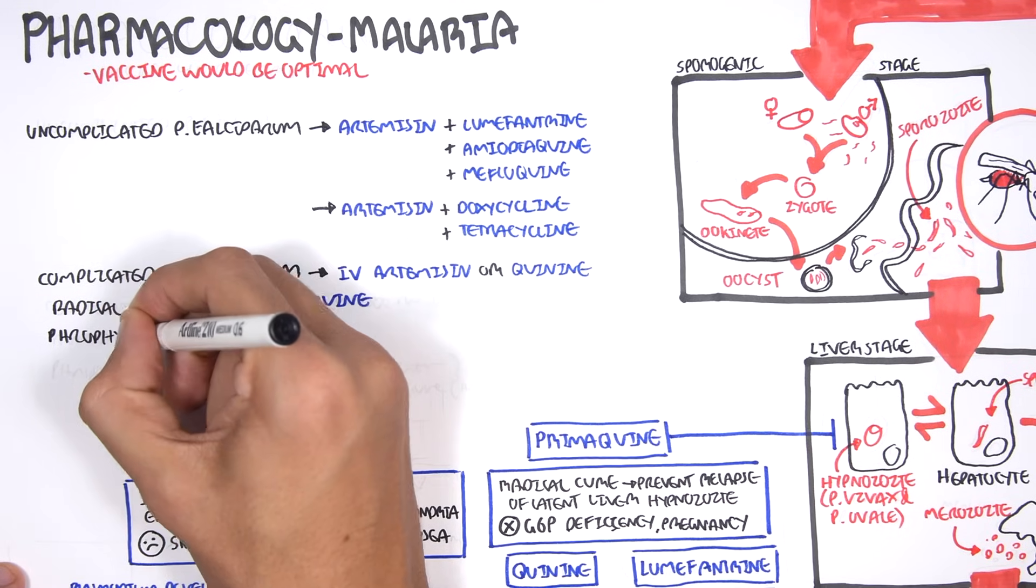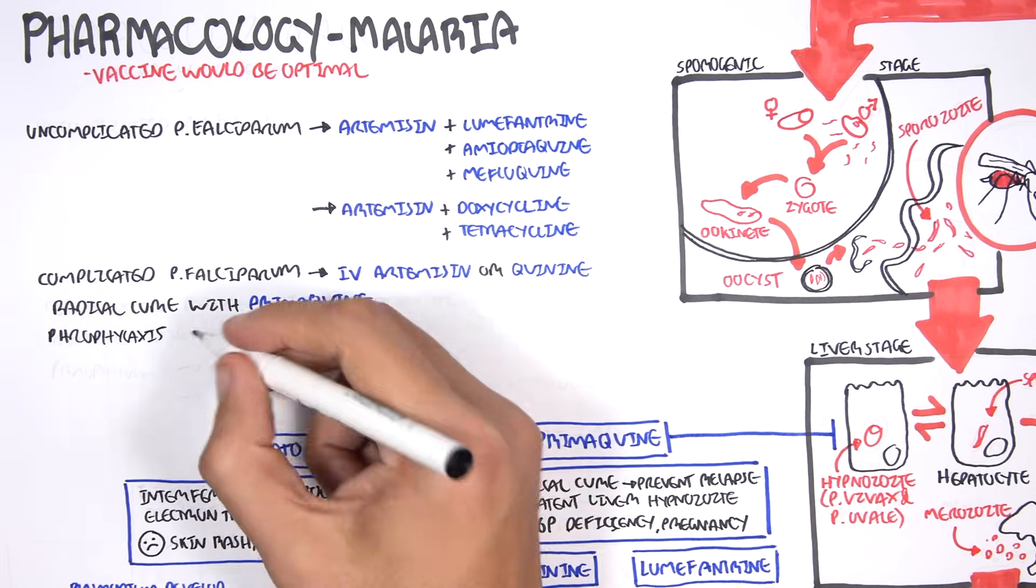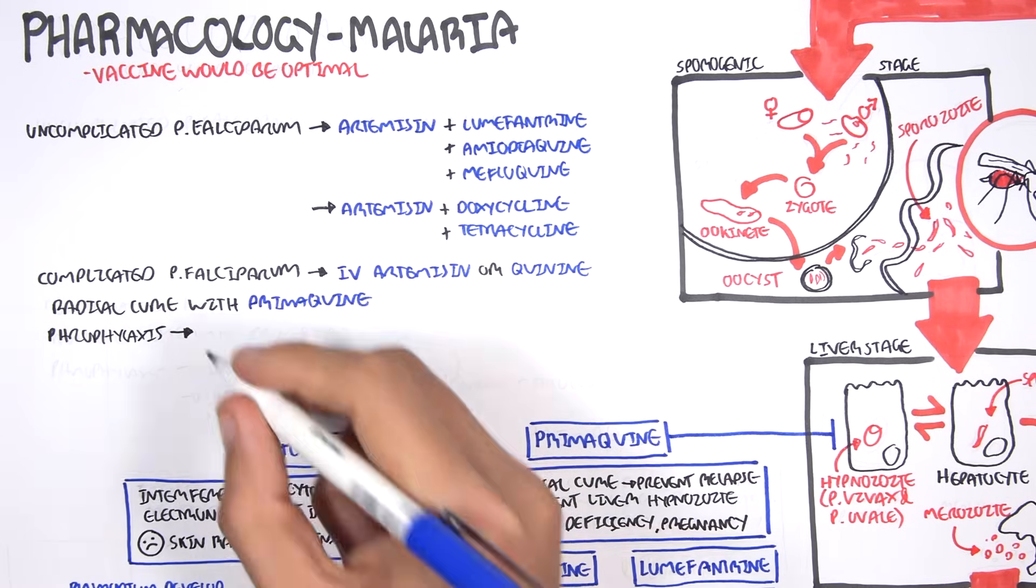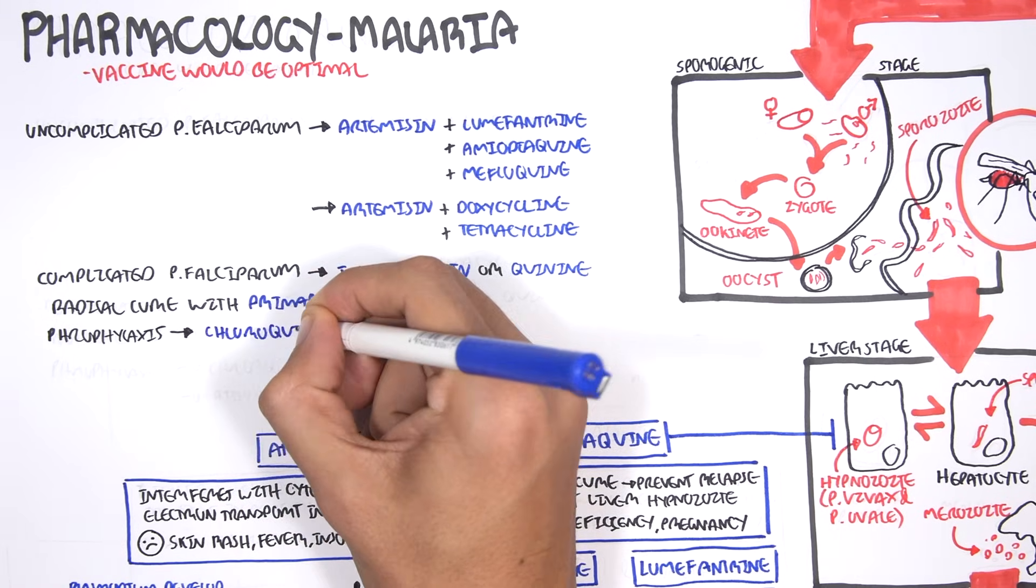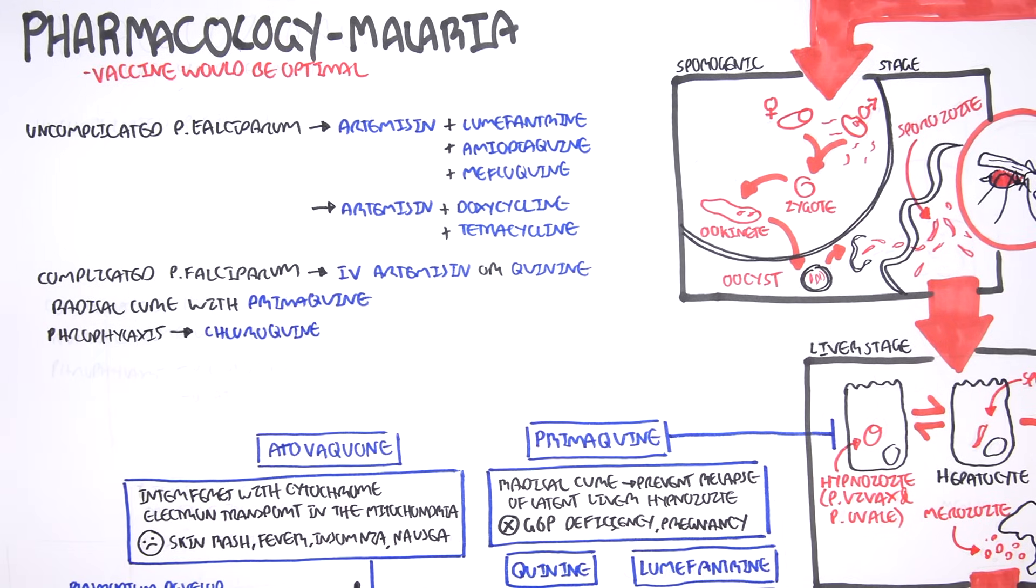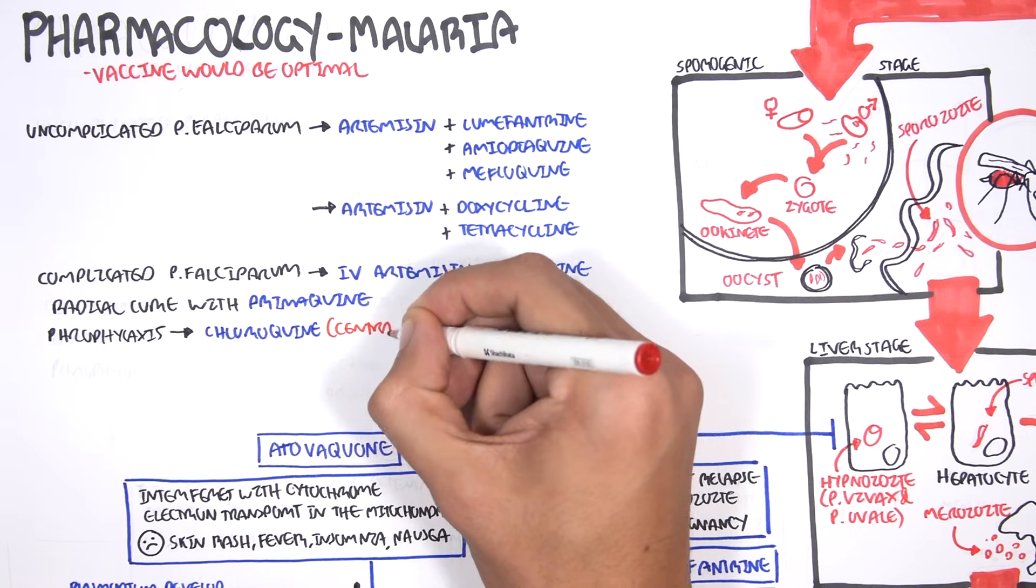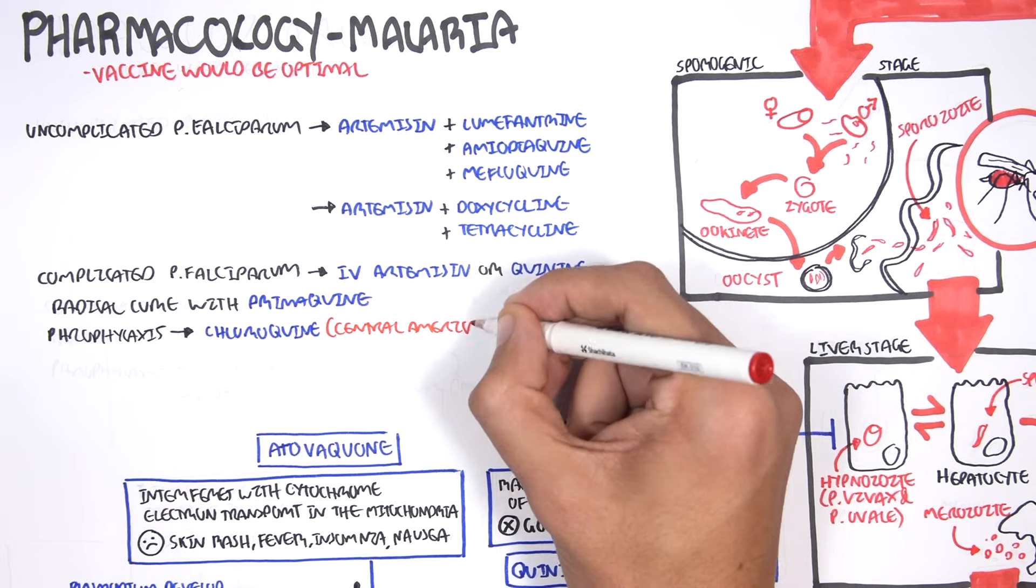For prophylaxis, we would give a traveler, for example, chloroquine. And we would give them chloroquine for areas which there is no resistance to chloroquine. So these are areas such as Central America.